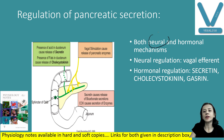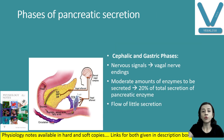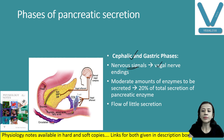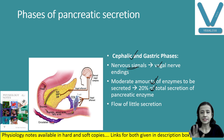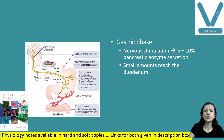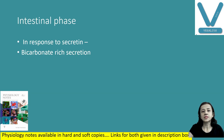Pancreatic secretion is regulated mainly by neural and hormonal mechanisms. Neural regulation is via the vagus nerve; important hormones are secretin and cholecystokinin, with gastrin also playing a role. Phases of secretion include the cephalic phase and gastric phase, where nerve signals — same as those increasing gastric and salivary secretion — also increase pancreatic secretion, accounting for about 20% of total enzyme secretion after a meal. During the gastric phase, nerve stimuli account for only 5–10% of pancreatic enzyme secretion.